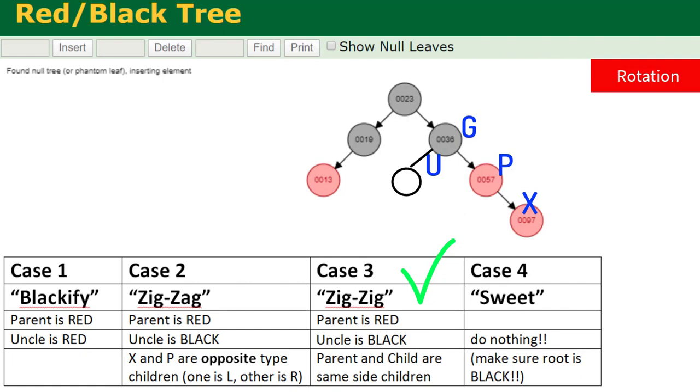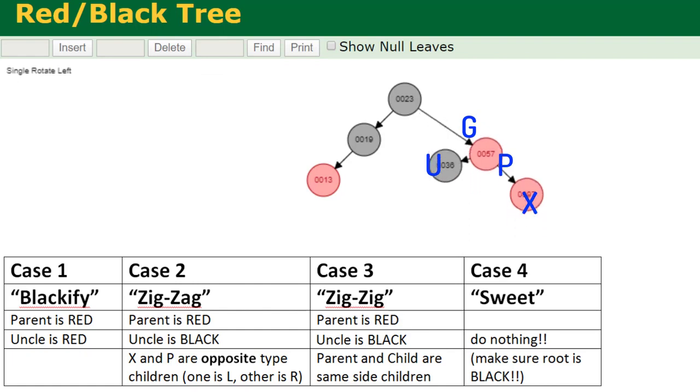All we're going to do is basically do a rotation so that P is at the very top of that sub tree of the grandparent, parent and X. 57 is eventually going to move to the top here. We're going to rotate P so it's the highest. Then we're going to color the grandparent red and the parent black. That's completion of case number three.